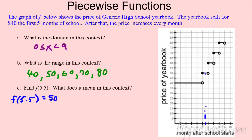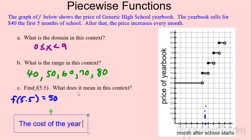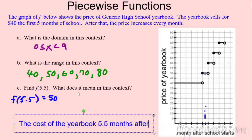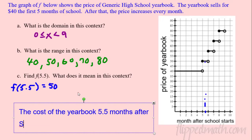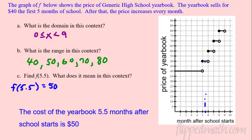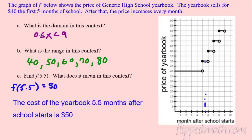For f(5.5): going to x = 5.5 on the graph, the price is $50. In context: the cost of the yearbook 5.5 months after school starts is $50. Anything between 5 and 6 months jumps to that $50 level. Next time we'll look at piecewise functions algebraically. Good luck on the practice and the mastery check!